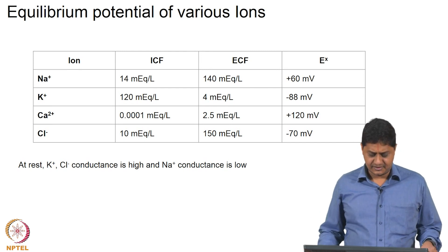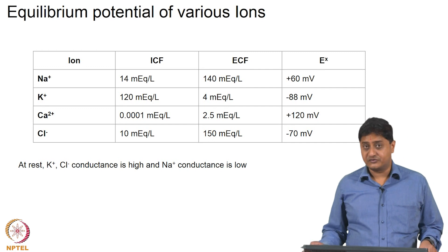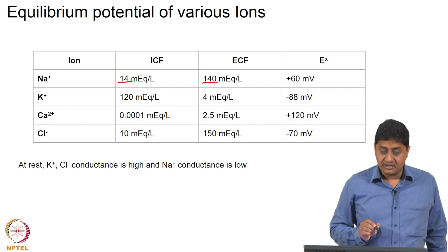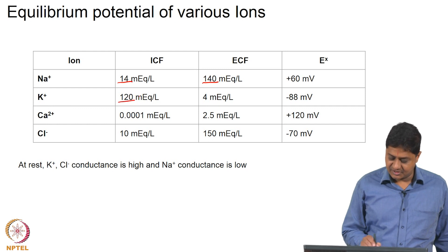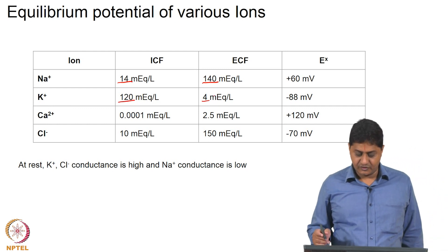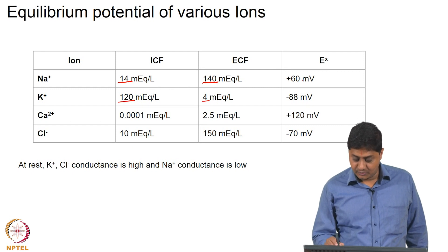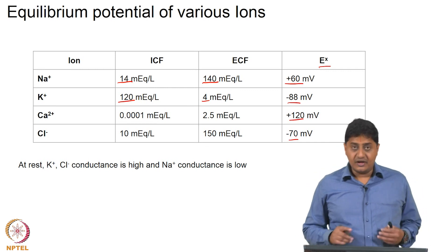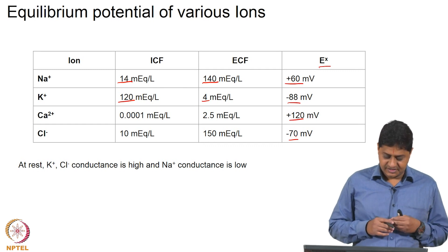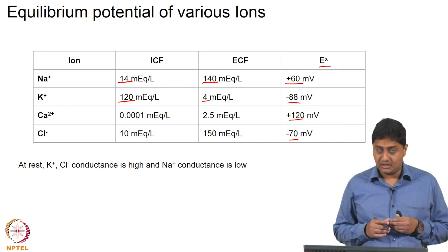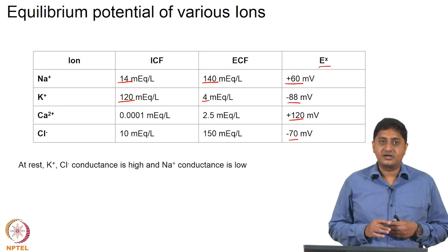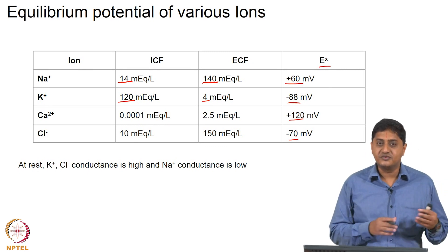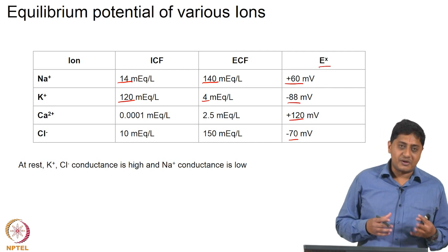In the previous classes we have seen that the sodium concentration inside and outside are very different. The sodium concentration outside is much higher than the concentration inside, and the potassium concentration inside is much higher than the concentration outside. Depending on that, the equilibrium potential — the Nernst potential — is different for these different ions. We also briefly discussed that depending on the contribution an ion makes towards the total conductance, the equilibrium potential of that ion is expected to be closer or further away from the membrane potential.